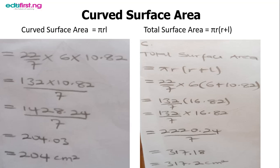The multiplication of 22×6 gives us 132 times 10.82. When we multiply the two together, we have 1,428.24, so you divide by the denominator which is 7, giving 204.03 or 204 centimeter square.